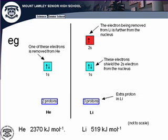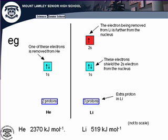Here's a specific example: helium with two protons and two electrons has both electrons in principal energy level one. Lithium with three protons and three electrons has two electrons in principal energy level one and one in principal energy level two. The ionization energy of lithium is almost one quarter that of helium, because lithium's outer electron is at a higher principal energy level, further from the nucleus, and has two inner electrons shielding it — counteracting the fact that lithium has a more positive nucleus.